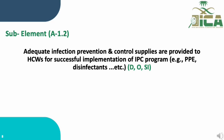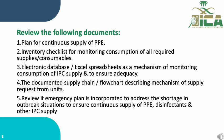A1.2: Adequate infection prevention and control supplies are provided to healthcare workers for successful implementation of the IPC program — example: PPE and disinfectants. This is evaluated by observation, interview, and document review. Review the following documents: number one, a plan for continuous supply of PPE; number two, an inventory checklist for monitoring consumption of all required supplies and consumables.